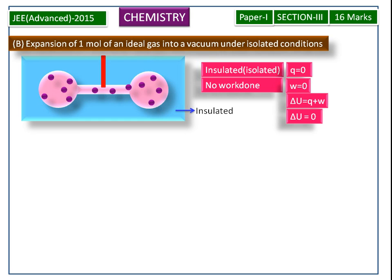For the B process, Q is equal to 0, W is equal to 0, and delta U is equal to 0.